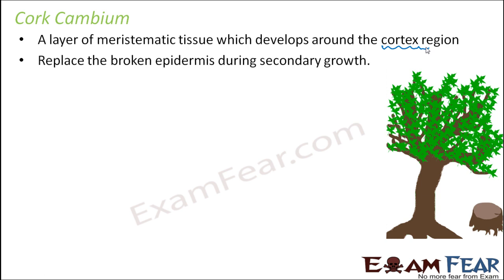So what does it do? It tries to replace the broken epidermis during secondary growth. As I said, whenever secondary growth takes place, more and more secondary xylem is formed. As a result, the secondary phloem and the primary phloem get destroyed, and the epidermis layers also get broken. So all the outer layers get broken. For that purpose, a meristematic tissue develops in the cortex region and gives rise to new cells which will be a replacement to the epidermis layer.